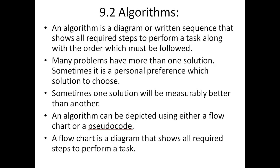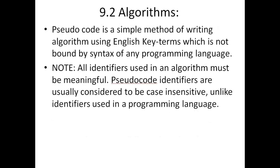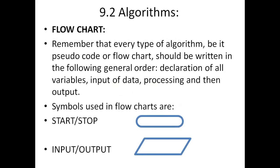An algorithm can be depicted using either a flowchart or pseudocode. A flowchart is a diagram that shows all required steps to perform a task. Pseudocode is a simple method of writing an algorithm using English key terms, which is not bound by the syntax of any programming language. All identifiers used in an algorithm must be meaningful, otherwise you may lose marks. Pseudocode identifiers are usually considered to be case insensitive, unlike identifiers used in a programming language.